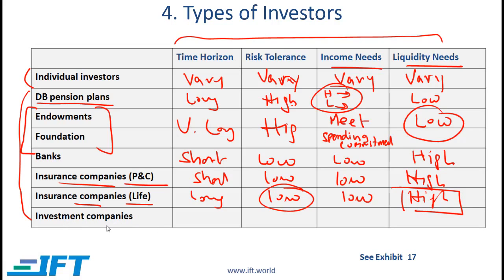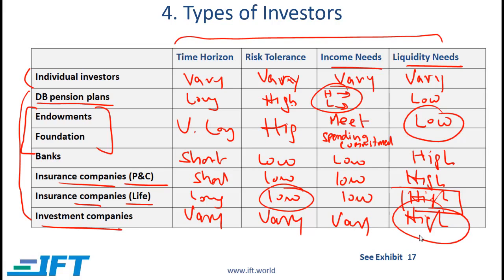Investment companies — mutual funds — will be discussed later. Their time horizon, risk tolerance, and income needs all vary depending on the particular fund. Liquidity needs are relatively high, meaning they hold mostly liquid investments. This material has been covered at a high level, which is sufficient for Level 1. At Level 3, the same topic is covered in much greater detail.